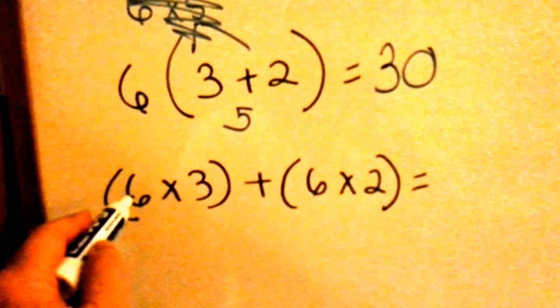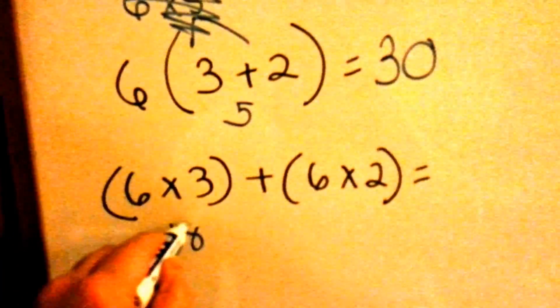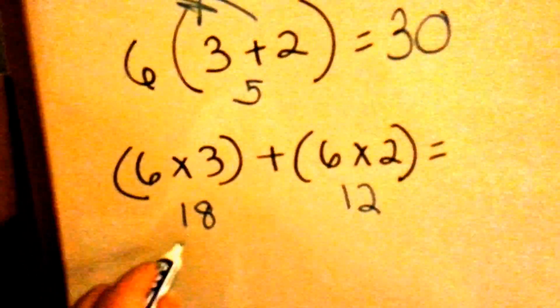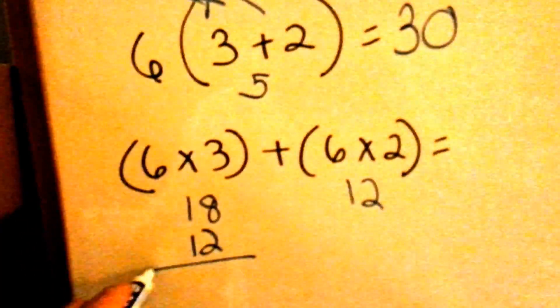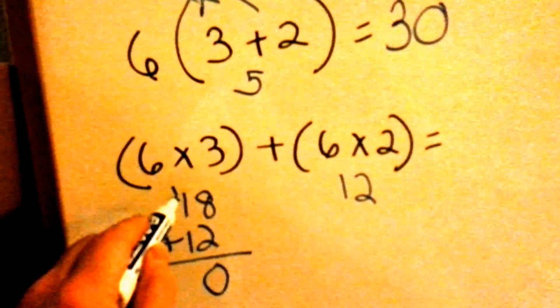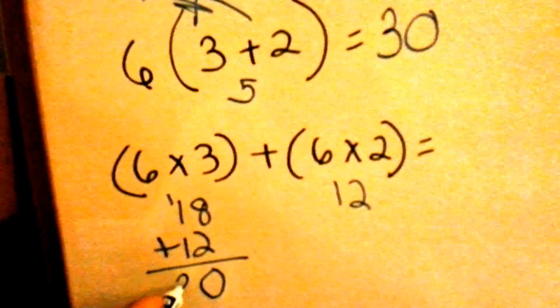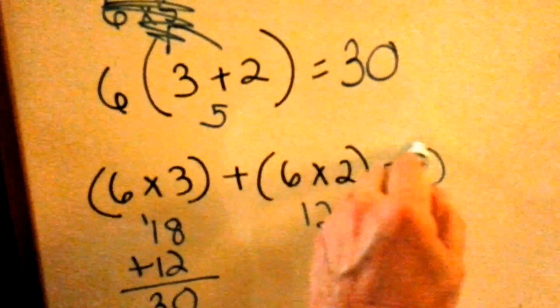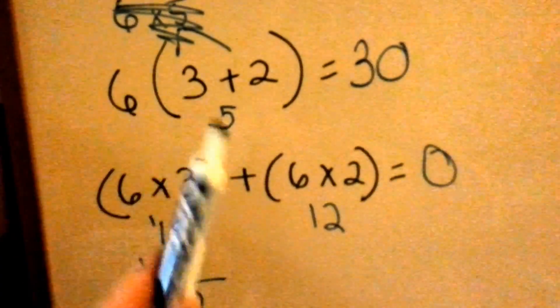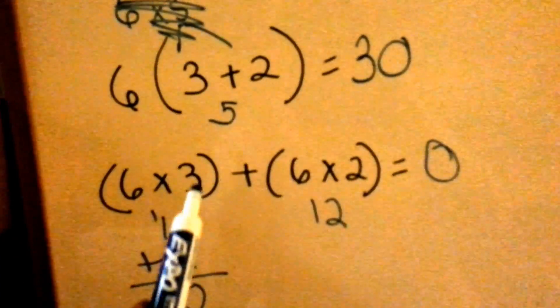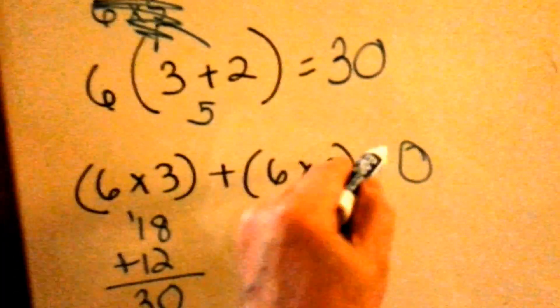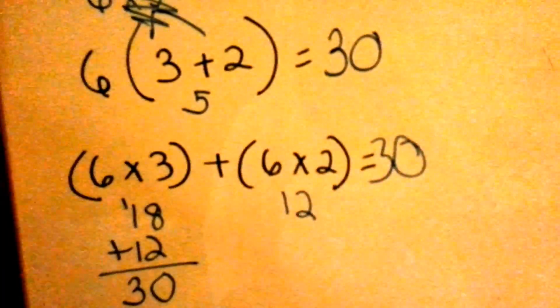We could have gone 6 times 3, which is 18, and 6 times 2, which is 12, and we could have added them together. 8 plus 2 is 10. Carry the 1, put down the 0, and 1, 2, 3. So, whether you break it up like this and add these and then multiply it, or you break it up like this and put the 3 here and then the 2 here, you're still going to get the same answer. You're still going to get 30.